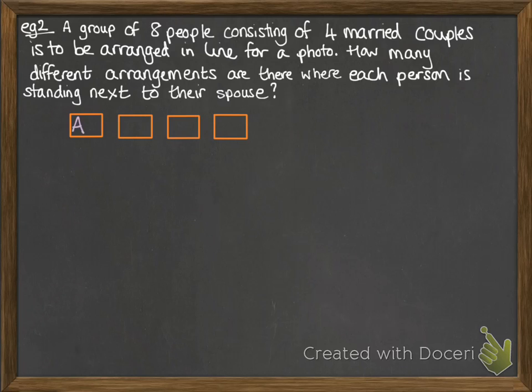For this one, you need to think about this as four distinct blocks. Within each block we have the partners, so each block is a married couple. A is married to B, C is married to D, and so on. Those could be arranged in 4 factorial ways. But also within each block we could switch those two people over, so we could have BA instead of AB. Within each block they could be arranged in 2 factorial ways. So we also need to multiply by that, and we get our final answer of 384.